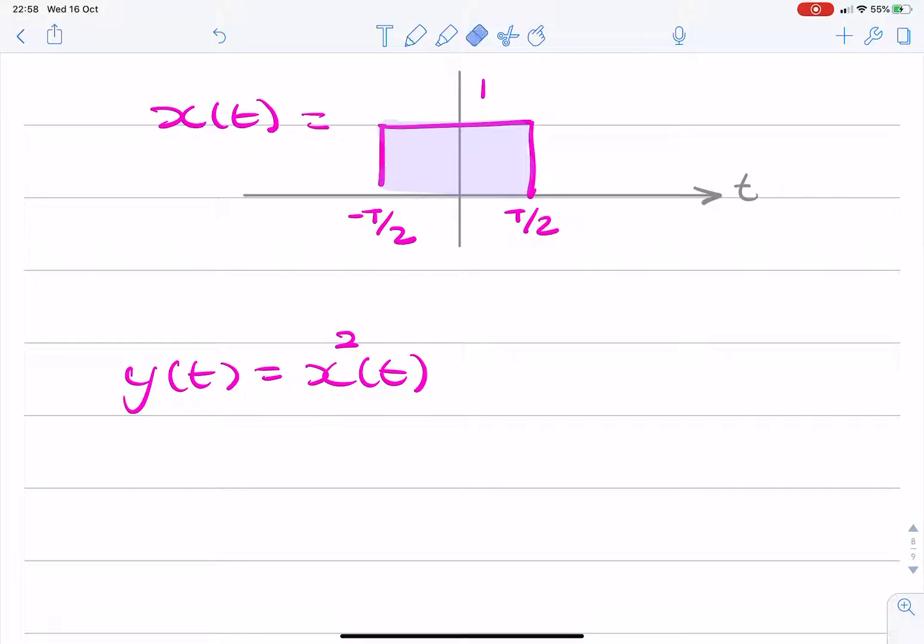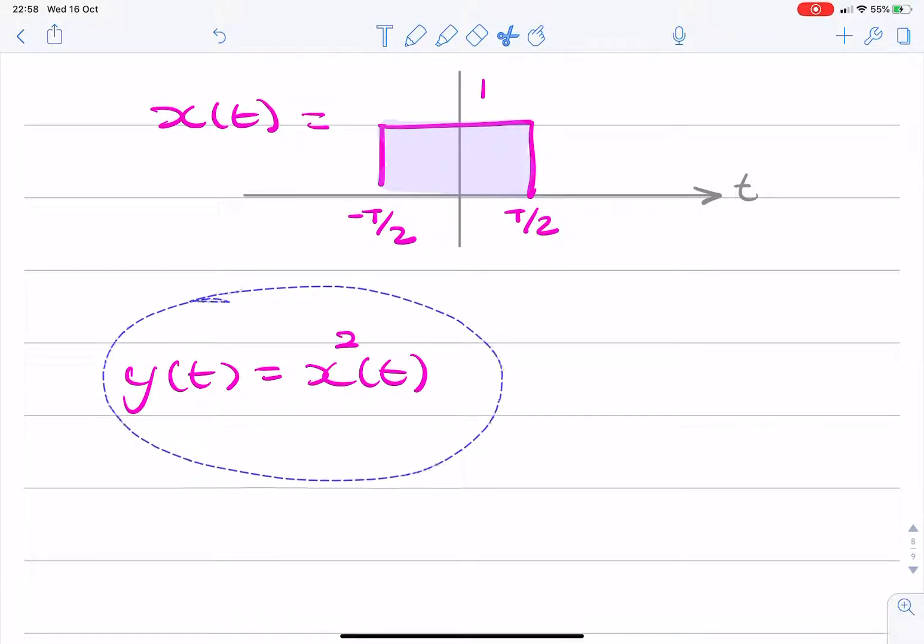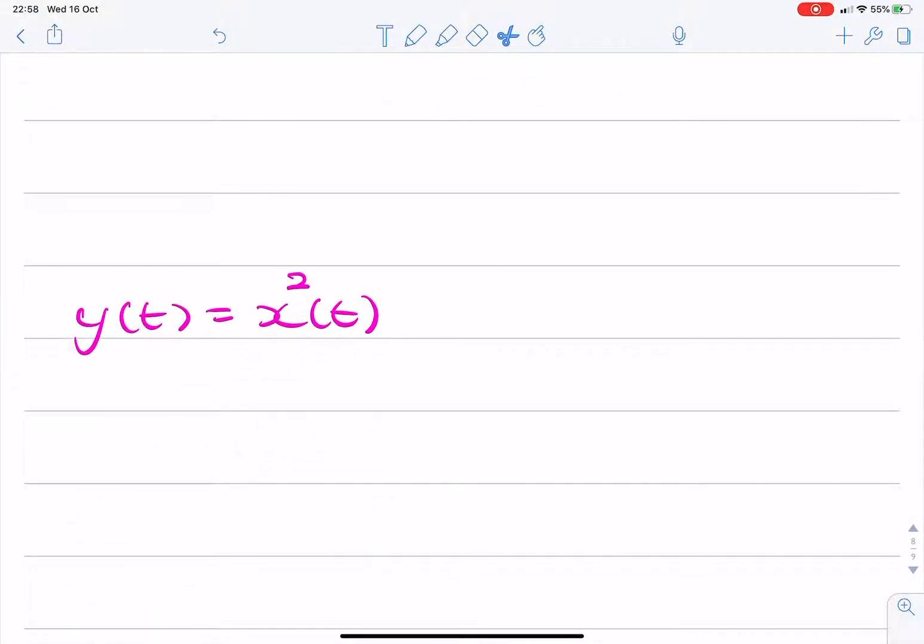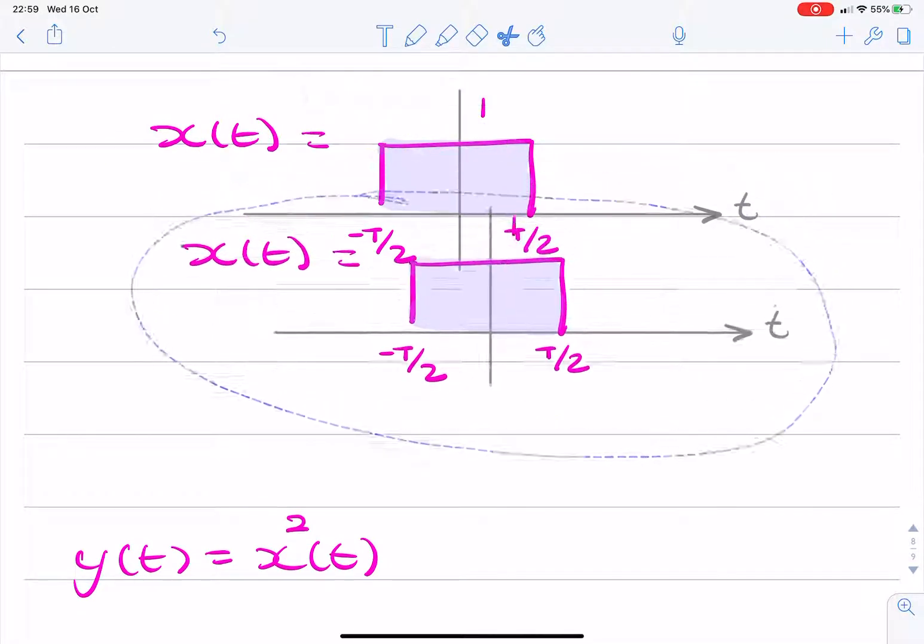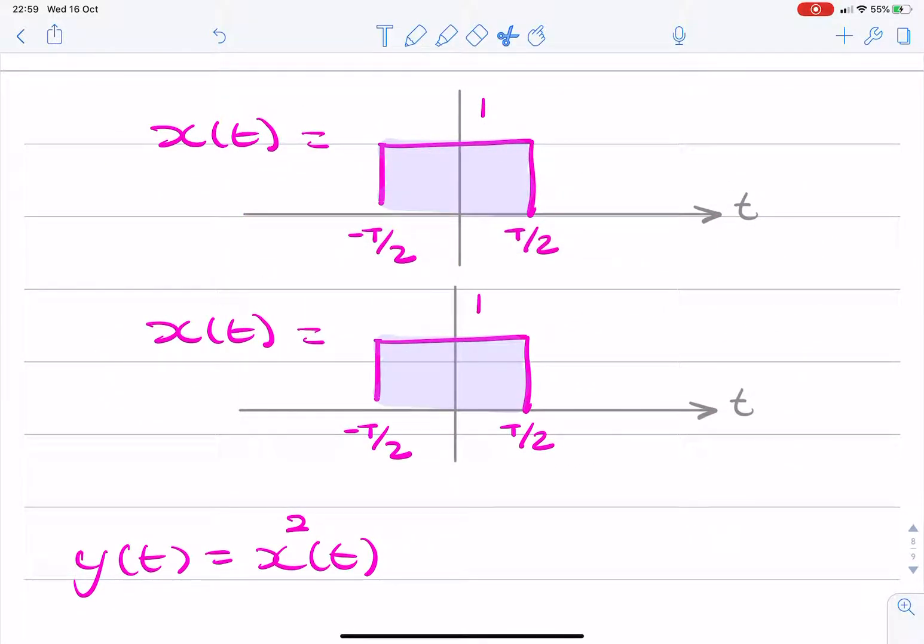So think what would happen if we took this rectangular function and we multiplied it by a version of itself. So here's a rectangular function. And if I were to multiply that by another rectangular function, an identical version of that.